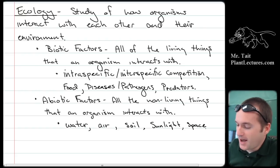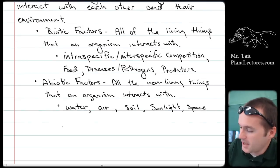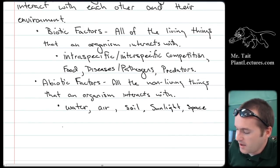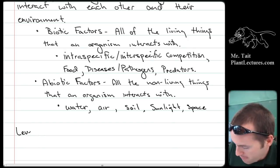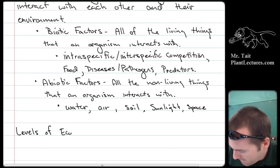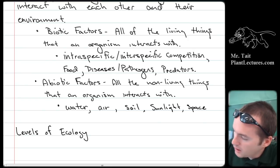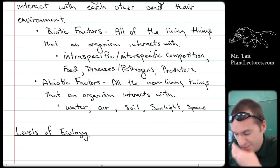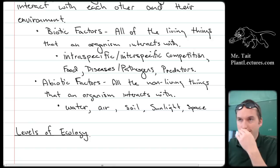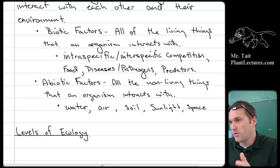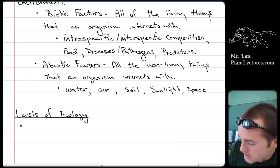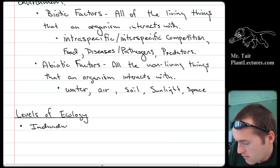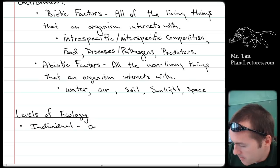Next in ecology, we need to cover the levels of ecology — a sort of ecology hierarchy, similar to the cell hierarchy. Just like you have cells, then tissues, then organs, then organ systems, in ecology you start with an individual — the lowest level — which is just one member of a species.